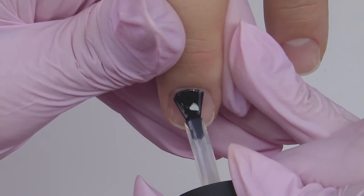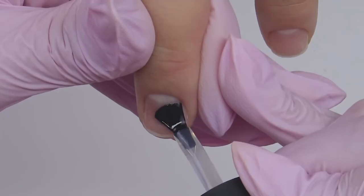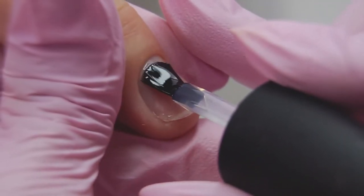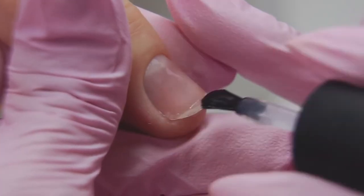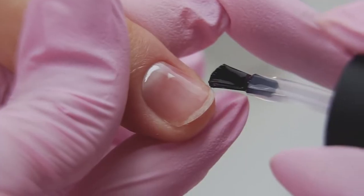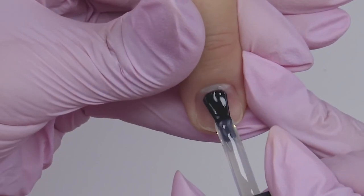Many nail techs struggle with sealing the free edge if it is protruding. Usually, I pull the front nail fault with my middle or pinky finger while applying the material. And carefully, paint along the tip. I hold it like this until I place the hand into the lamp.